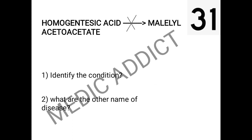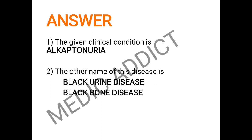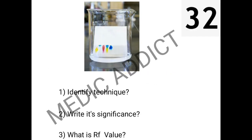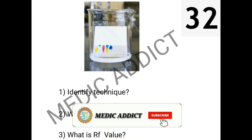Moving to the next spot, which is similar to the previous one, there is a conversion of homogentisic acid to maleylacetoacetate, and this is inhibited due to enzyme deficiency. We have to identify the condition and give its other name. The given condition is alkaptonuria, which occurs due to the accumulation of alkapton bodies in the body. The other name of the disease is black urine disease or black bone disease. It is called black urine disease because the alkapton bodies, which are black in color, are excreted in the urine.